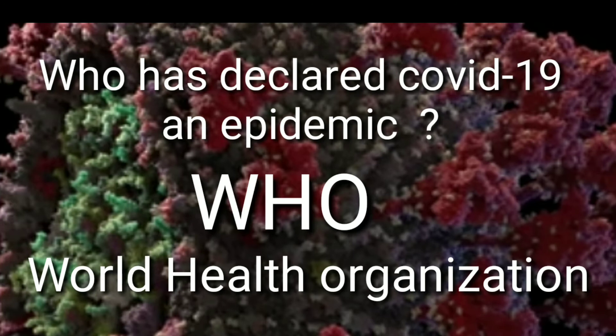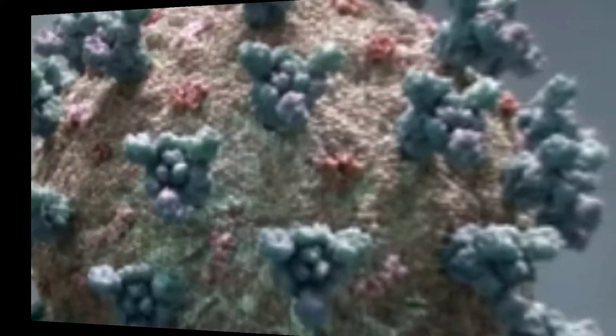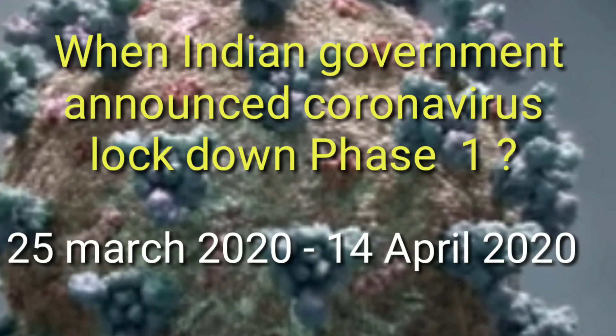Who declared COVID-19 an epidemic? WHO — World Health Organization. The next one: when did the Indian government announce the coronavirus lockdown phase 1? 25th March 2020 to 14th April 2020.